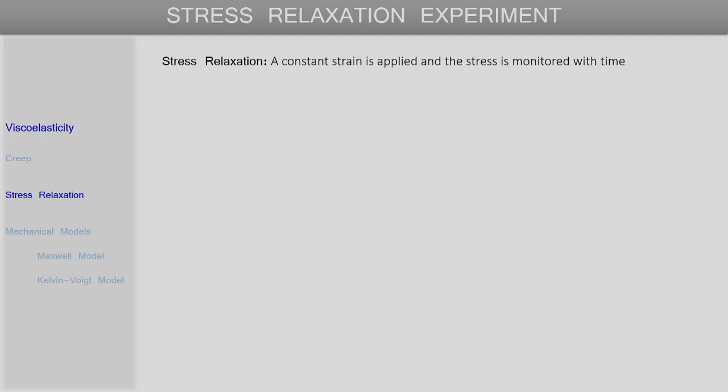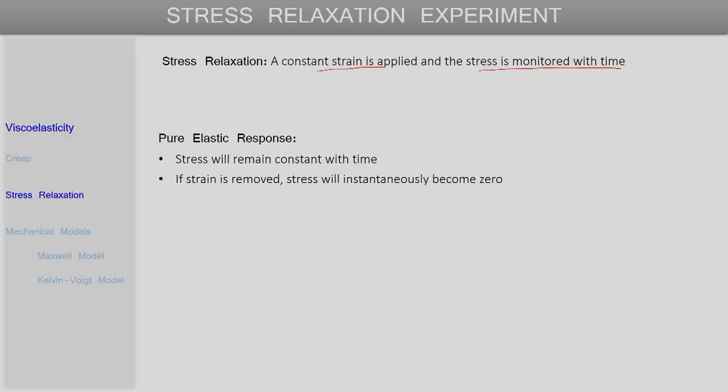For a stress relaxation experiment, a constant strain is applied and the corresponding stress is monitored with time. For a purely elastic solid, if we apply a constant strain, then immediately a corresponding constant stress will develop and as long as this constant strain is applied the same constant stress will be present. If strain is removed at a certain point of time then this stress will again instantaneously become zero.